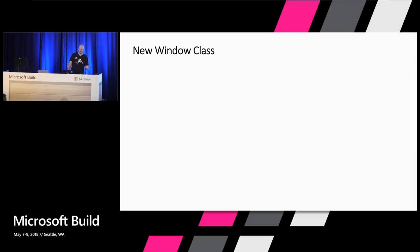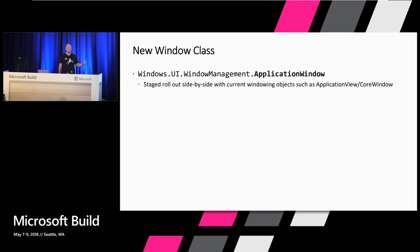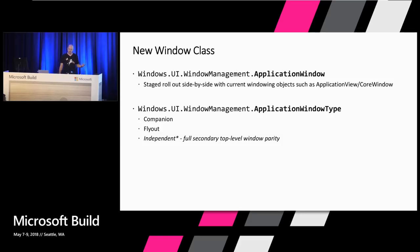The ApplicationWindow is a staged rollout. We're starting by giving you a window which is a companion to your current window. It will continue to grow, and eventually it will have all the capabilities that your ApplicationView / CoreWindow has today. The CoreWindow and the ApplicationView will continue to live on — you can still create those and work with those as you do today. With the ApplicationWindow type, there are two that we will start with: the companion window and the flyout.